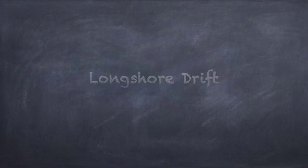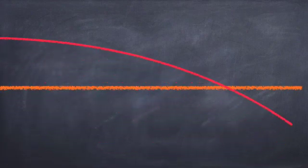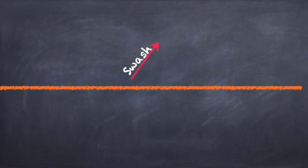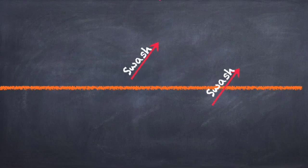Let us look at the formation of longshore drift. There we have the beach. Notice the wave comes onto the beach at an angle, and so therefore it means that the swash comes onto the beach at an angle. There you see how it comes not perpendicular to the beach, but at an angle.